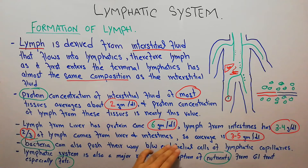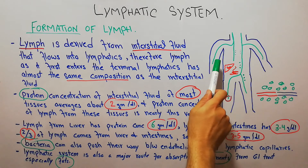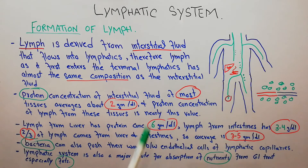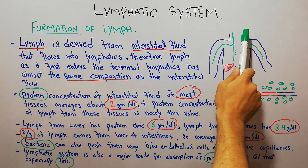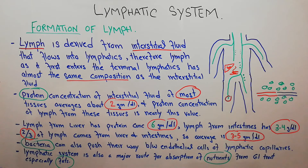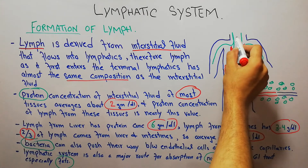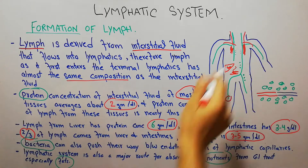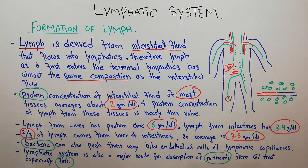Bacteria can also push their way between endothelial cells of lymphatic capillaries, and the lymphatic system is also a major route of absorption for nutrients from the GI tract, especially fats. So proteins, bacteria, fats, and other nutrients are the components that make up lymph. Lymph from the right arm, right side of the head, neck, and thorax goes into the right lymphatic duct, while lymph from the lower limbs, abdomen, left arm, and left side of the neck, head, and thorax goes into the thoracic duct. Both ducts enter the junction of the internal jugular vein and subclavian vein, so lymph becomes part of the blood.